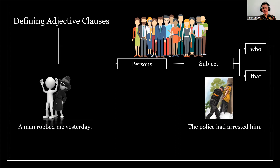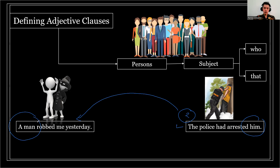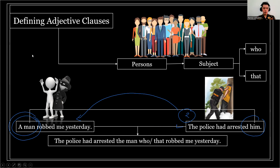'A man' in the first sentence is the same person as 'the man' in the second sentence. This means we can use the second sentence to give additional information to the first. When I say 'a man robbed me yesterday,' we can use the other sentence to give more specific information about this person. If you want to combine these two sentences into one using adjective clauses, it becomes: 'The police had arrested the man who/that robbed me yesterday.'